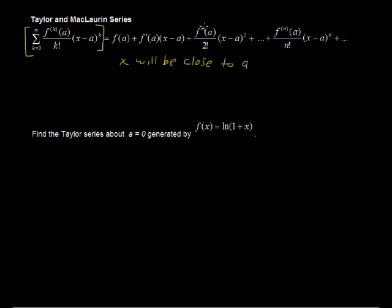The next term has the second derivative of the function evaluated at a over 2 factorial, where k equals 2. Note that k equals 0 and k equals 1 come before it, and 0 factorial equals 1. This term is multiplied by x minus a to the second power. The parentheses notation on the function indicates the kth derivative — not a power — so f with (k) in parentheses means the kth derivative.